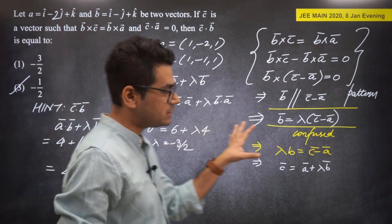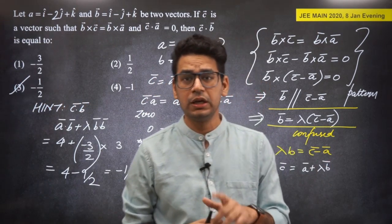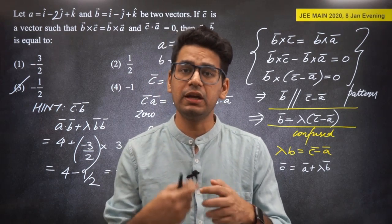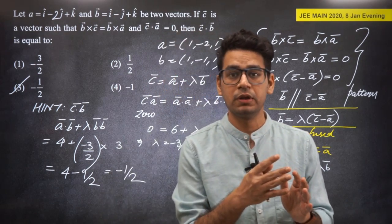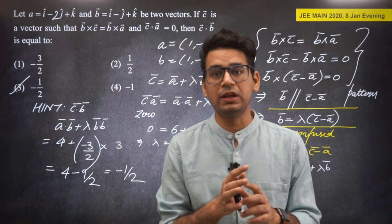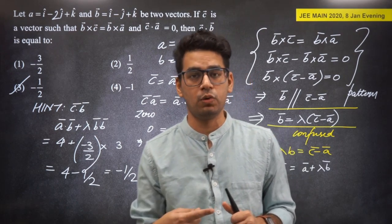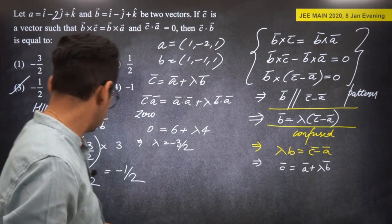The answer is -1/2, which is option 3. This is a pattern-based question that repeats in various exams — practice it repeatedly. The key pattern: B×C = C×A leads to C = A + lambda*B.